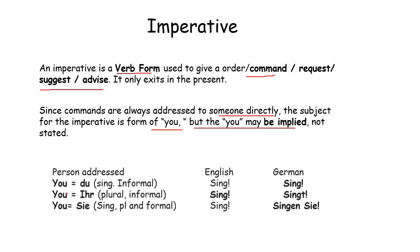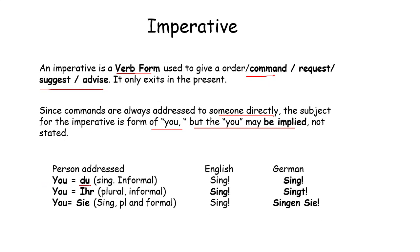So German has three different forms of you, like you informal du, you all ihr informal, Sie you formal.